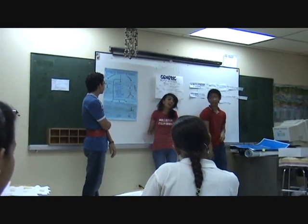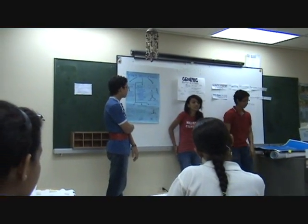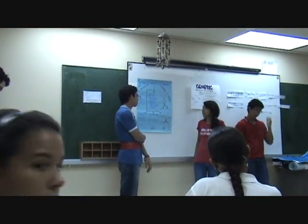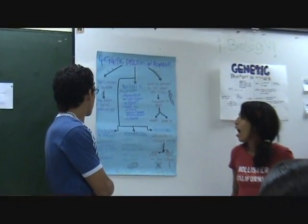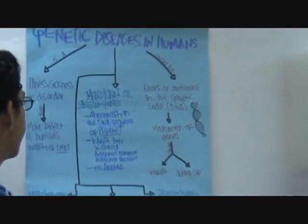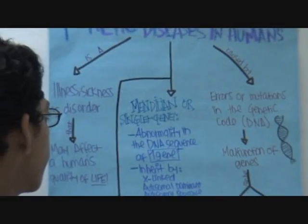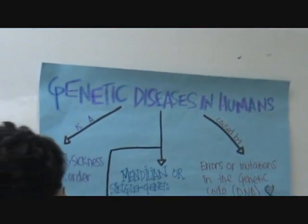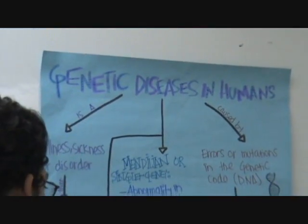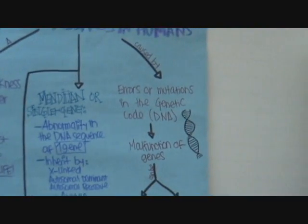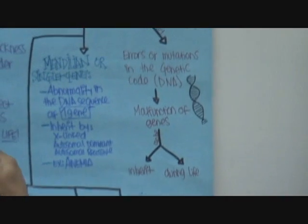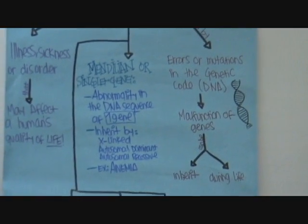Genetic diseases are caused by an error in the DNA sequence, and it's caused by the malfunctioning of the gene. You can have it by inheritance from your parents, or you can gain it during your life because of an environmental factor that makes the gene mutate.